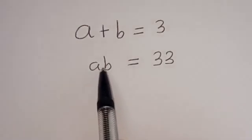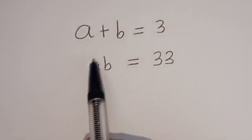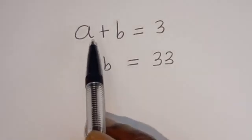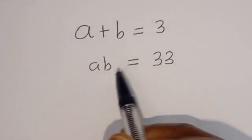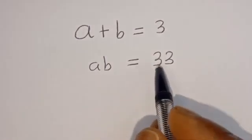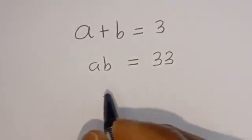Hello, how to solve for A and B in this equation? A plus B is equal to 3. A times B is equal to 33.